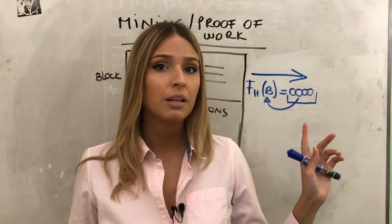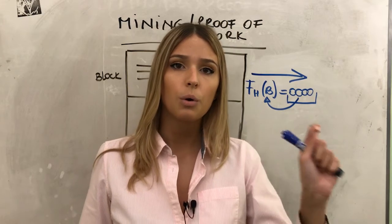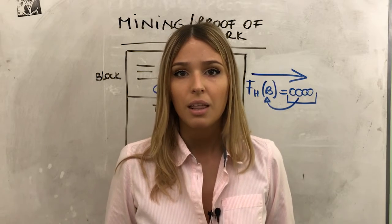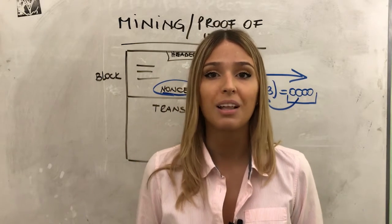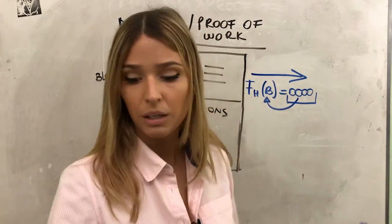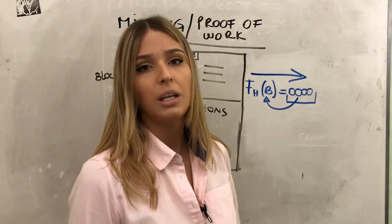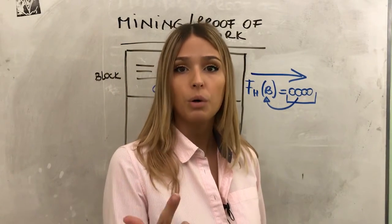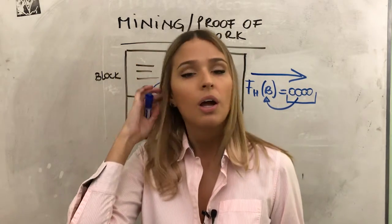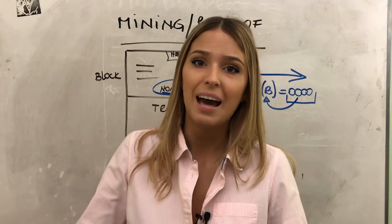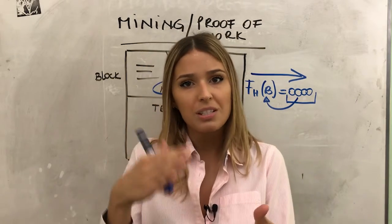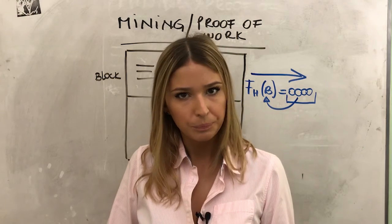When the winning miner provides the correct nonce, what do they win? They win two things: a transaction fee and a block reward. The block reward is exactly what answers the question of where new Bitcoin comes from — it is literally rewarded into existence. This process halves every four years.